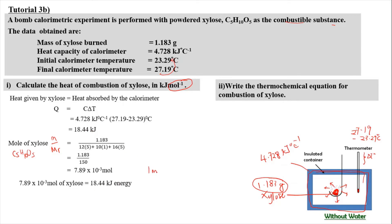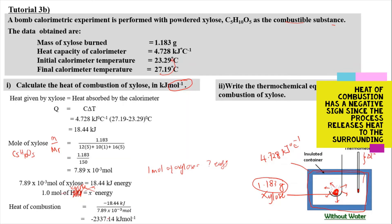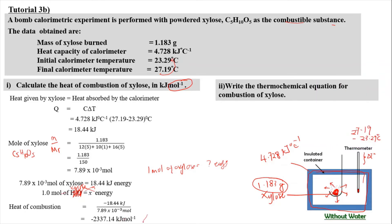We need the heat for 1 mole of xylose. Using stoichiometry (cross multiplication): 1 mole of xylose produces x energy, so x = 18.44 × 1 / (7.89 × 10⁻³). The heat of combustion for 1 mole of xylose is therefore −2337.14 kJ/mol. This is the heat released by combustion per mole of xylose.